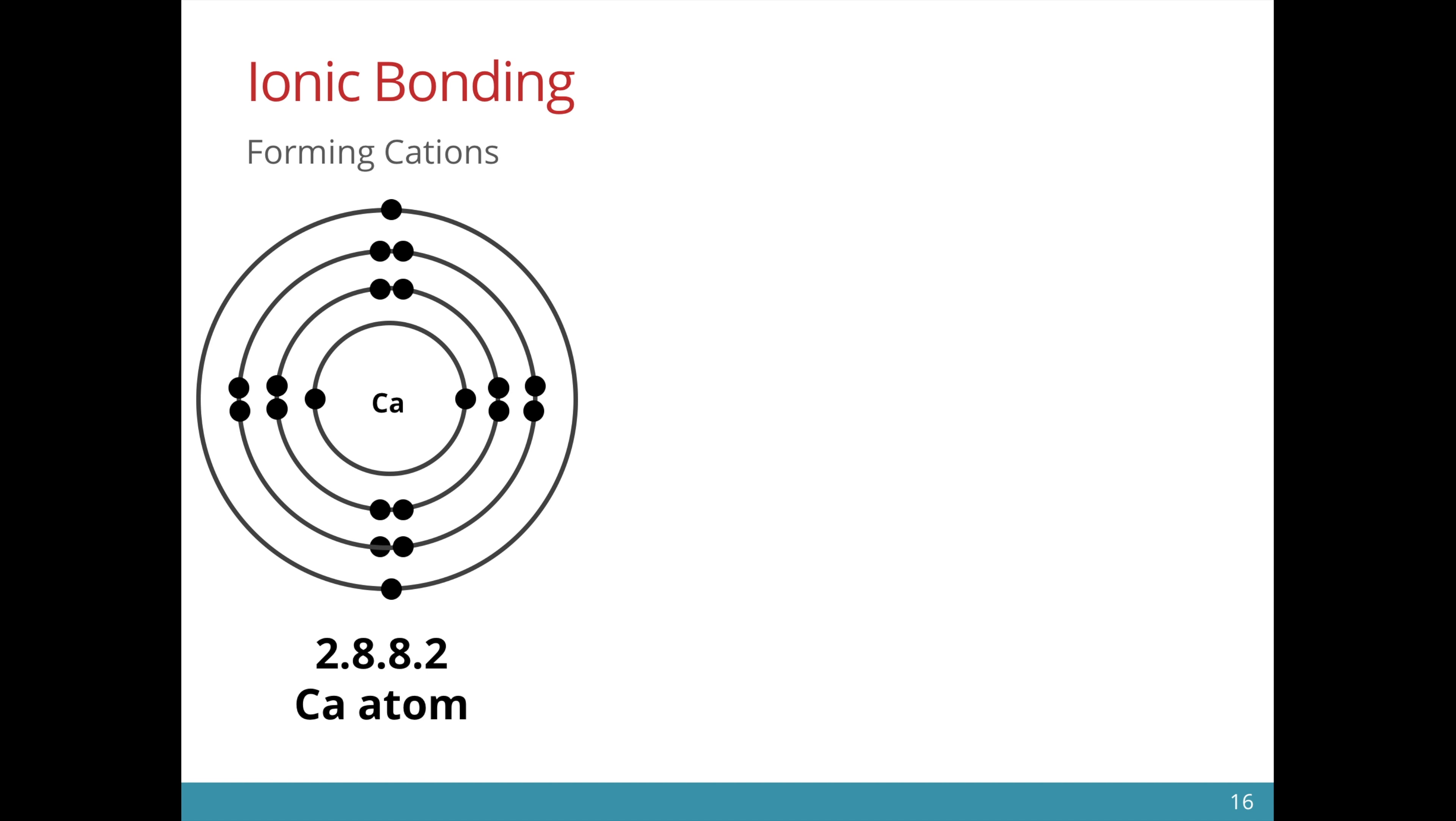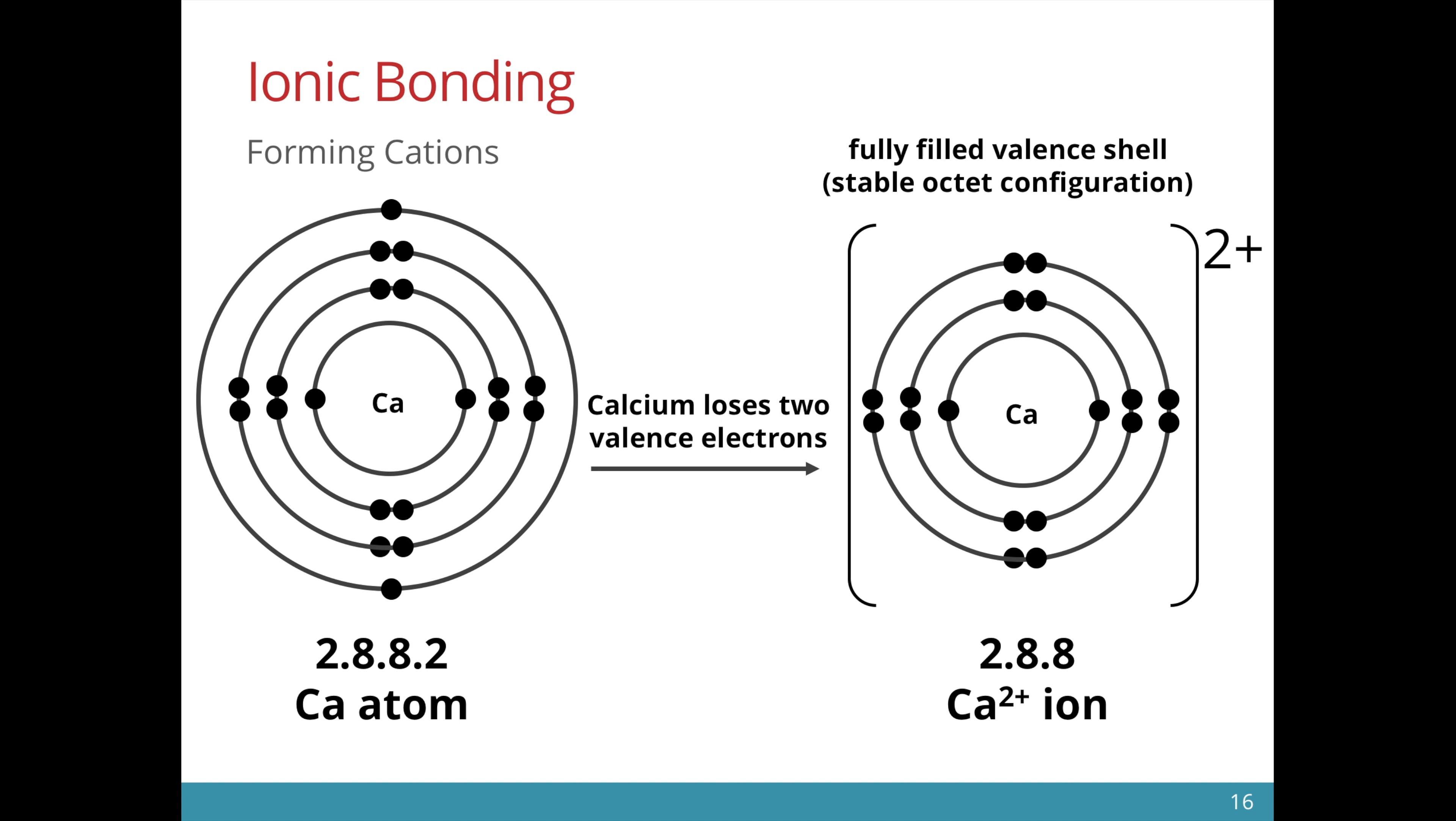Calcium is in group 2. In order to form the fully filled valence shell, it can either lose 2 electrons or gain another 6. But it would be easier for calcium to lose 2 electrons rather than to gain 6 of it. On losing 2 electrons, there are now 2 more protons than electrons. Therefore, there is a 2 plus charge on the calcium ion. The calcium ion now has a fully filled valence shell.